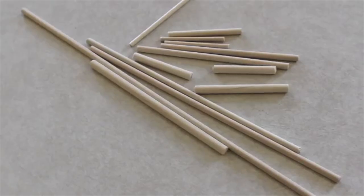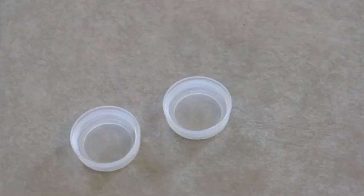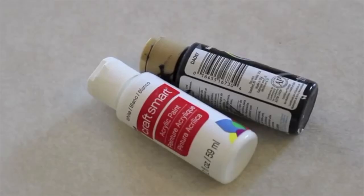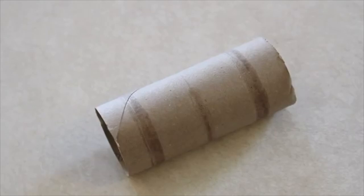I'm going to make a grill for a doll using wooden dowels, popsicle sticks, scrapbook paper, bottle caps, toothpicks, craft paint, duct tape, and a toilet paper roll.